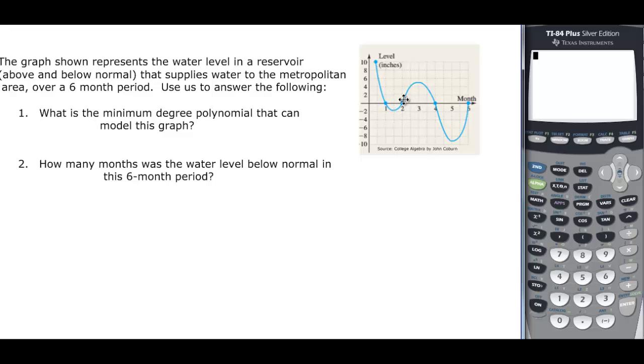We got one turn, two turns, three turns. So three turns means that I can have one more in my degree, so it's degree four.